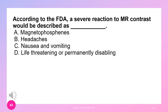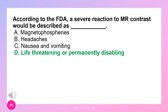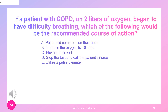According to the FDA, a severe reaction to MR contrast would be described as life-threatening or permanently disabling. If a patient with COPD on 2 liters of oxygen began to have difficulty breathing, which of the following would be the recommended course of action? A) cold compress on head, B) increase oxygen to 10 liters, C) elevate feet, D) stop the test and call the patient's nurse, E) utilize a pulse oximeter. The answer is D — stop the test and call the patient's nurse.